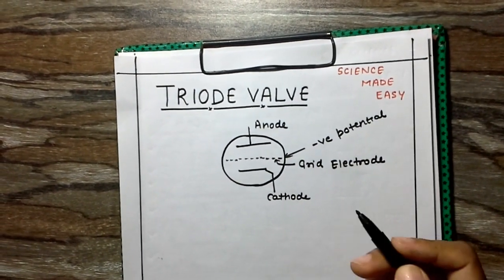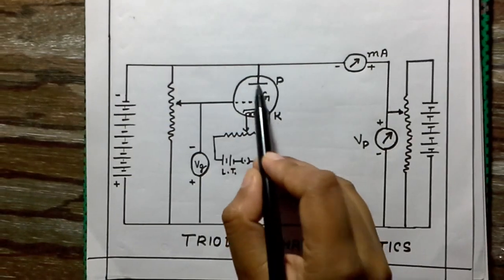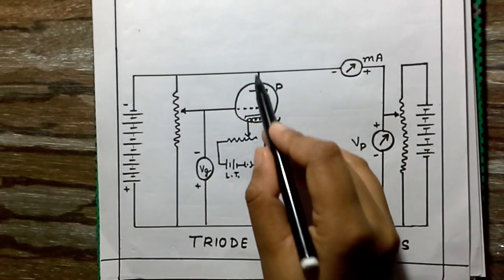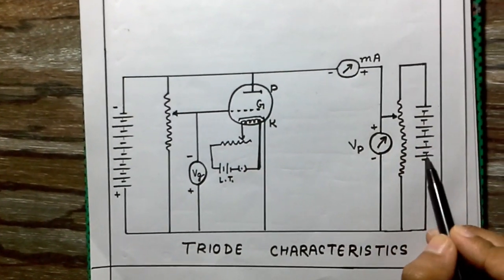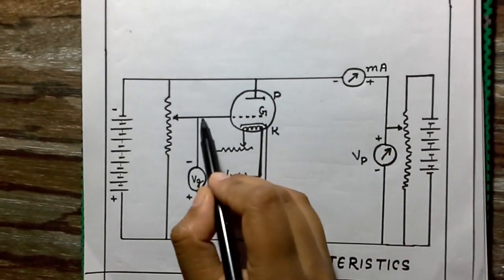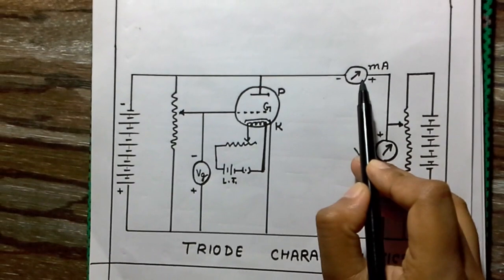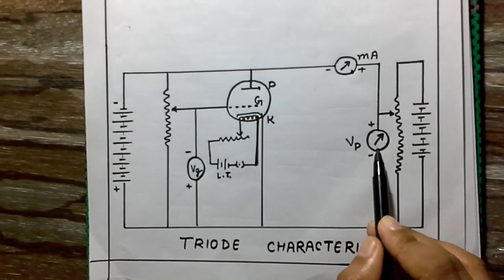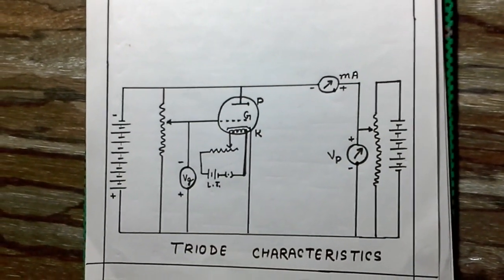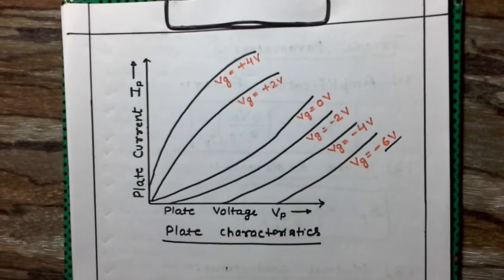To describe it further, we have drawn a circuit diagram here. In this circuit diagram, this is the triode valve in which this is the plate, this is the cathode, and this is the grid. The plate is given a positive potential using a high tension supply, the cathode is heated electrically using a low potential supply, the grid is given a negative potential, the plate current is measured by this ammeter, and the grid potential is noted by this voltmeter.